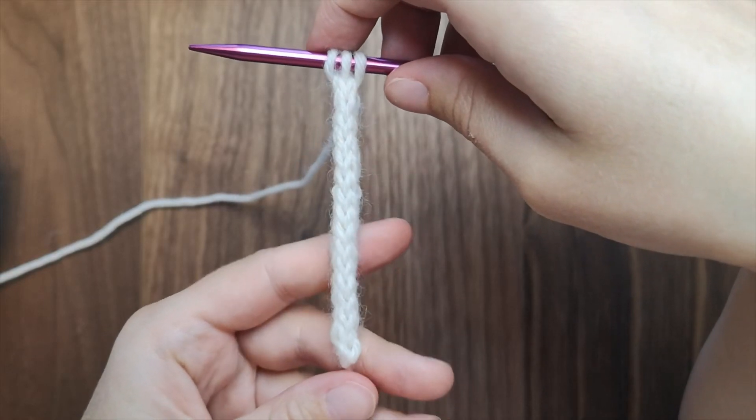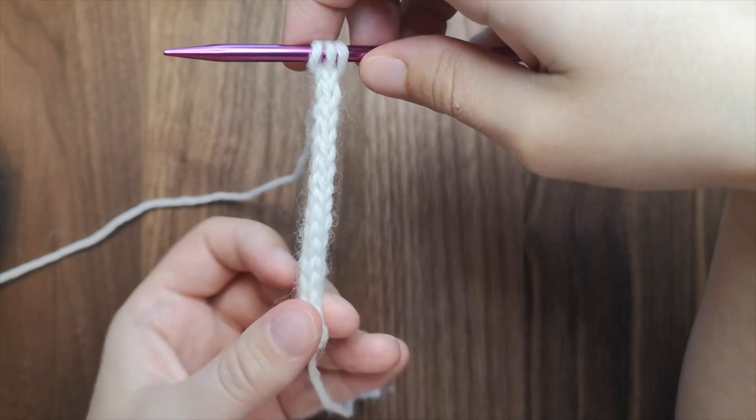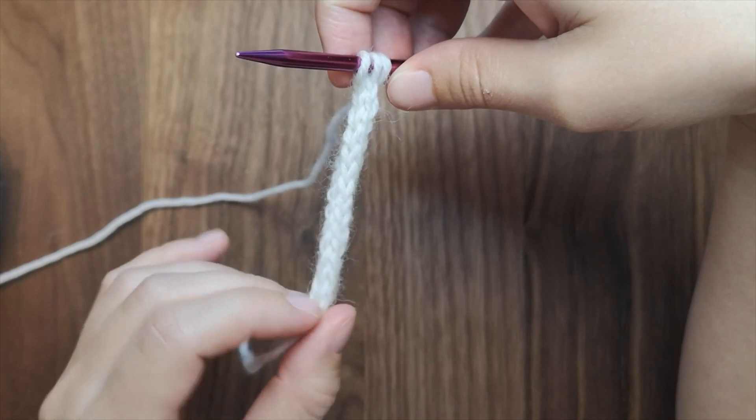In this video I am showing you how to knit an I-cord. An I-cord is basically a tiny knitted tube.